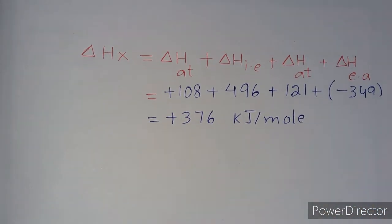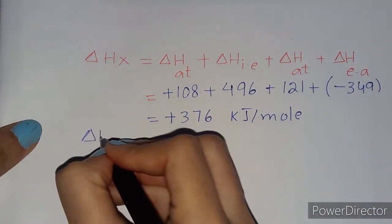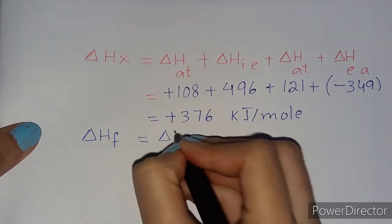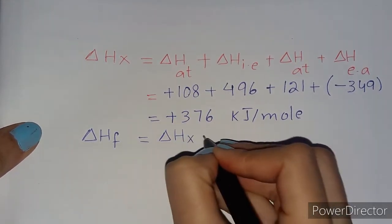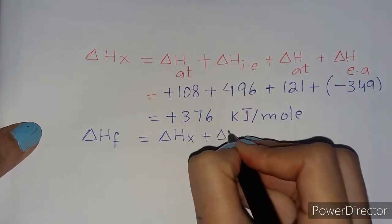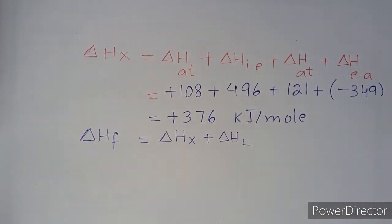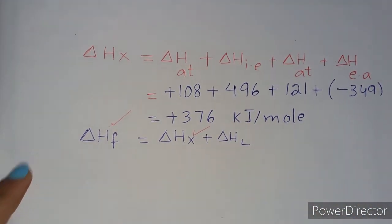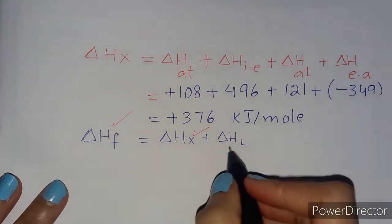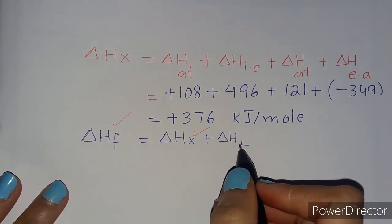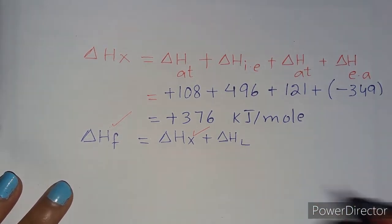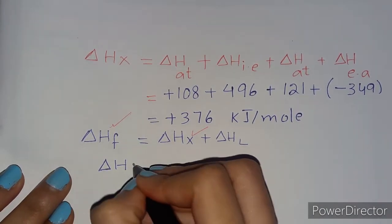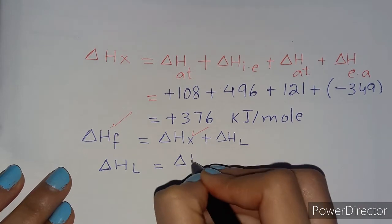Now the equation was ΔHF = ΔHX + ΔHL. We have the value of ΔHF (−411 kJ/mol) and ΔHX (+376 kJ/mol), so we can find the lattice energy ΔHL by rearranging: ΔHL = ΔHF − ΔHX.